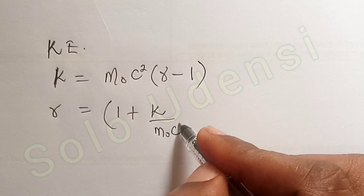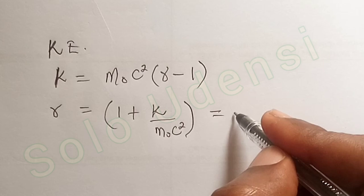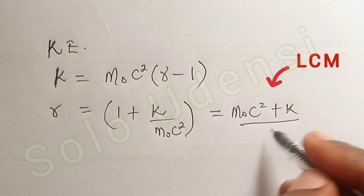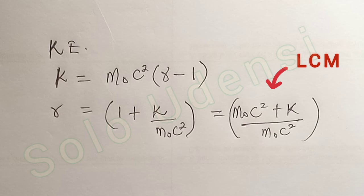To get gamma, we know that gamma is equal to M₀c² plus K, all over M₀c². So that gives us the Lorentz factor.